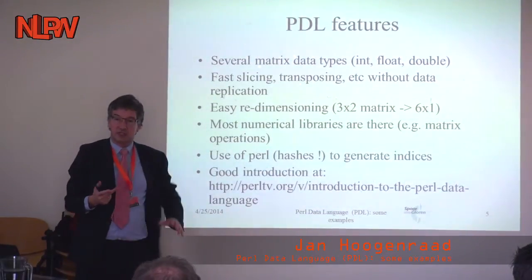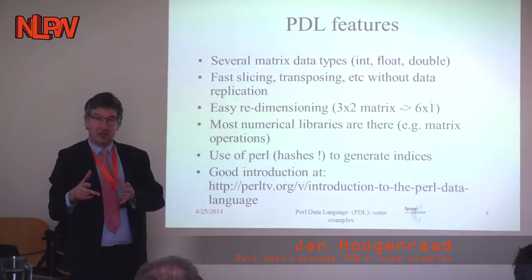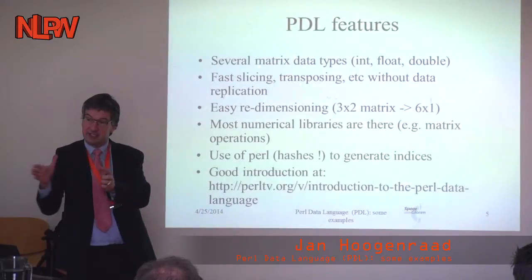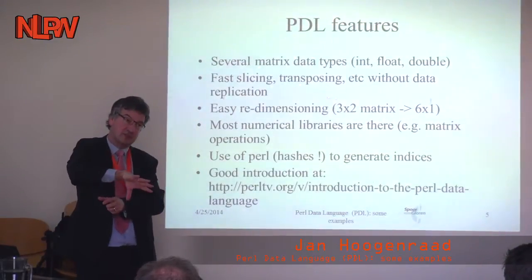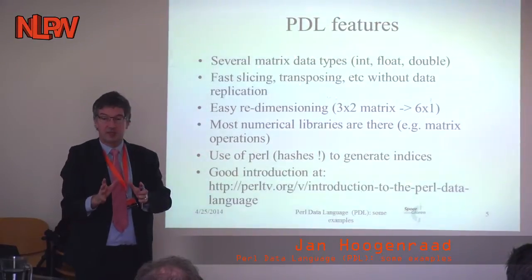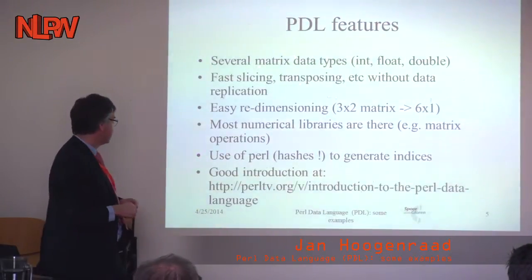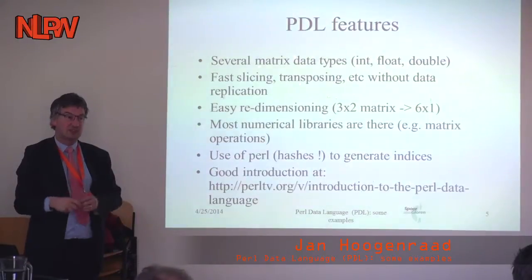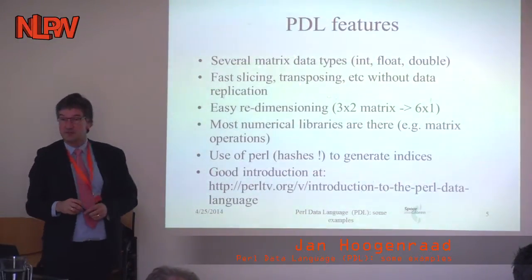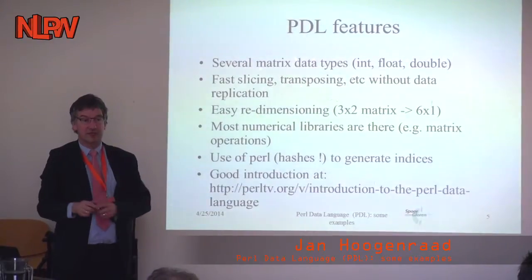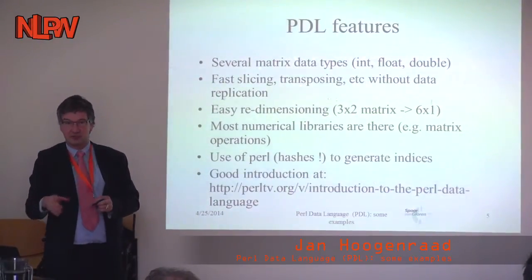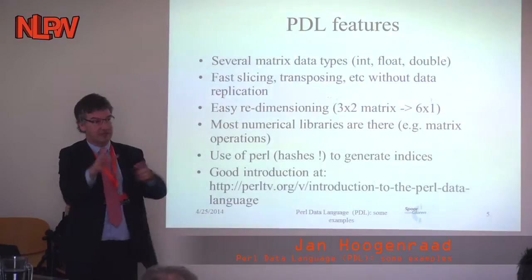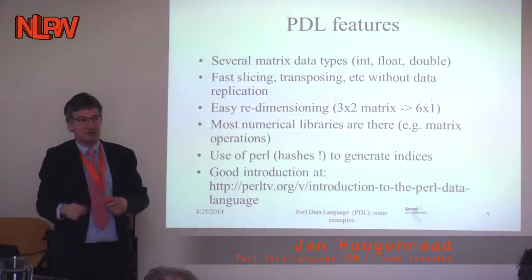What I often use is Perl hashes to recode values into numerical values and array indices, so I can do my calculations in PDL matrices, while all the I/O I handle in normal Perl. There's a very good introduction to the internals of PDL on PerlTV — it's an hour long covering all the internals of how PDL works. I don't want to cover it here; I just want to give you a gist of what's possible rather than walk through every code example.